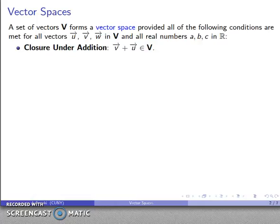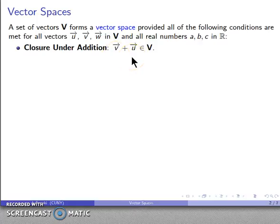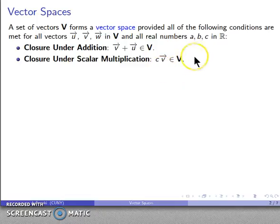The first requirement is closure under addition: given two elements of the vector space, their sum — however I define that sum — must also be part of the vector space. I also want closure under scalar multiplication: given any vector and any real number, that scalar multiple must also be an element of the vector space.